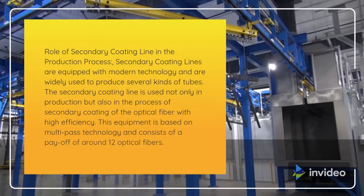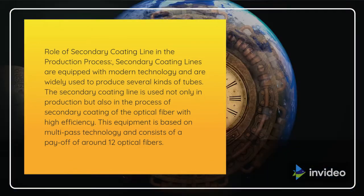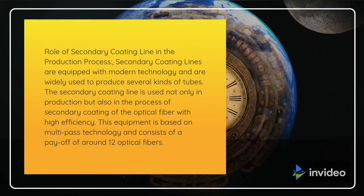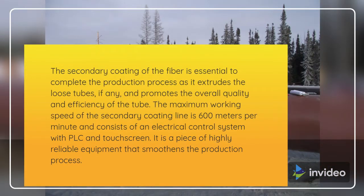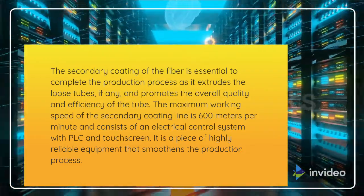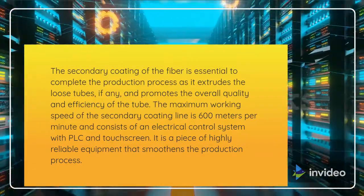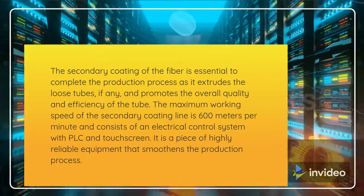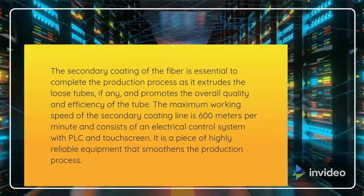The secondary coating line plays a role in the production process. Secondary coating lines are equipped with modern technology and are widely used to produce several kinds of tubes. The secondary coating line is used not only in production but also in the process of secondary coating of the optical fiber with high efficiency. This equipment is based on multi-pass technology and consists of a payoff of around 12 optical fibers. The secondary coating of the fiber is essential to complete the production process as it extrudes the loose tubes and promotes the overall quality and efficiency of the tube. The maximum working speed of the secondary coating line is 600 meters per minute and consists of an electrical control system with PLC and touchscreen. It is a piece of highly reliable equipment that smoothens the production process.